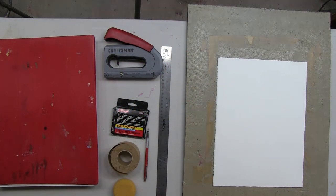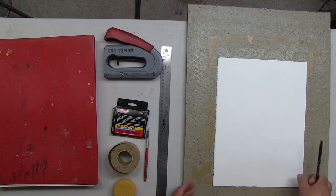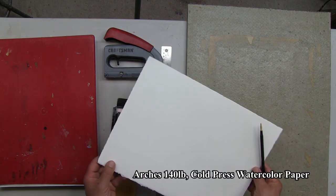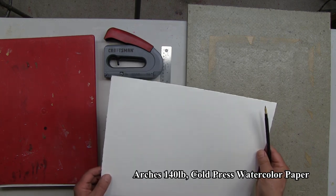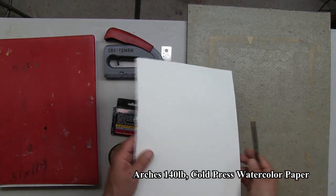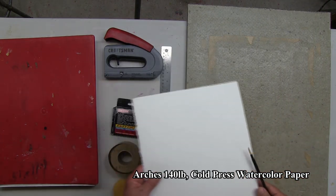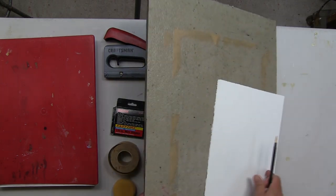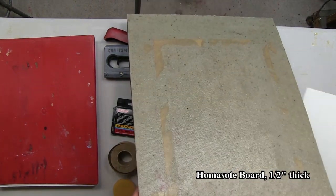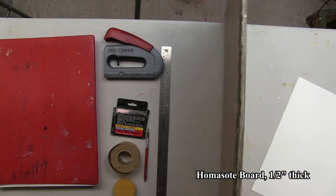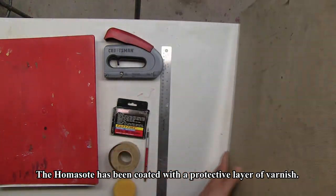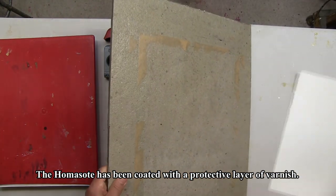The basic tools that I'll need to stretch the paper are, of course, my watercolor paper. This is a sheet of Archer's cold press 140 pound paper that I've cut from a larger sheet. My homosote mounting board. This mounting board does not require back bracing because a small sheet like this will not warp the board.